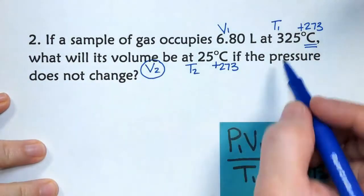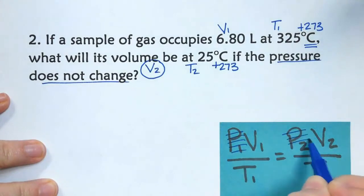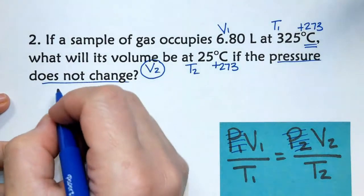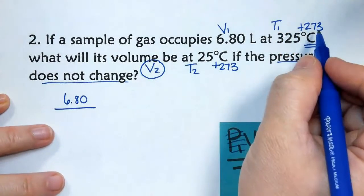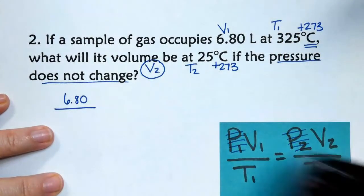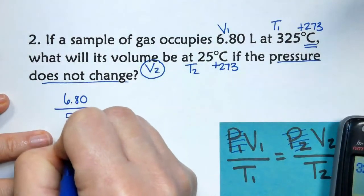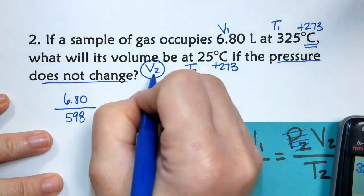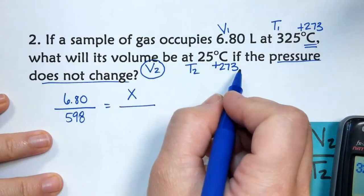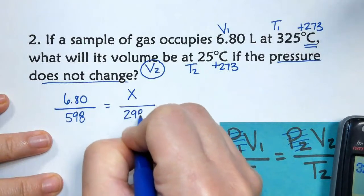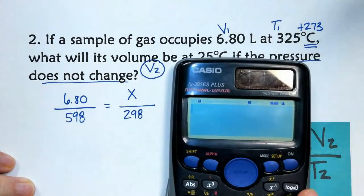Remember, we have notes that says pressure does not change, and they didn't give us any pressures, so that means that pressure is not a factor, so we'll just ignore that. So our equation is going to be V1 over T1, but I'm going to need to add my 325 plus 273, which is 598, so this is 598, equals V2 is my X over T2, and I'm going to have to add 25 plus 273, which is 298. So now that I have my problem set up, I can use cross multiplication to solve it.